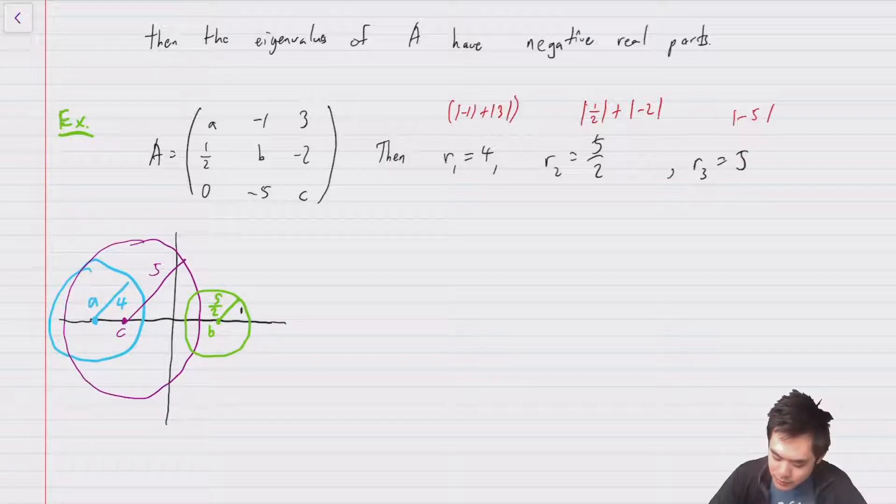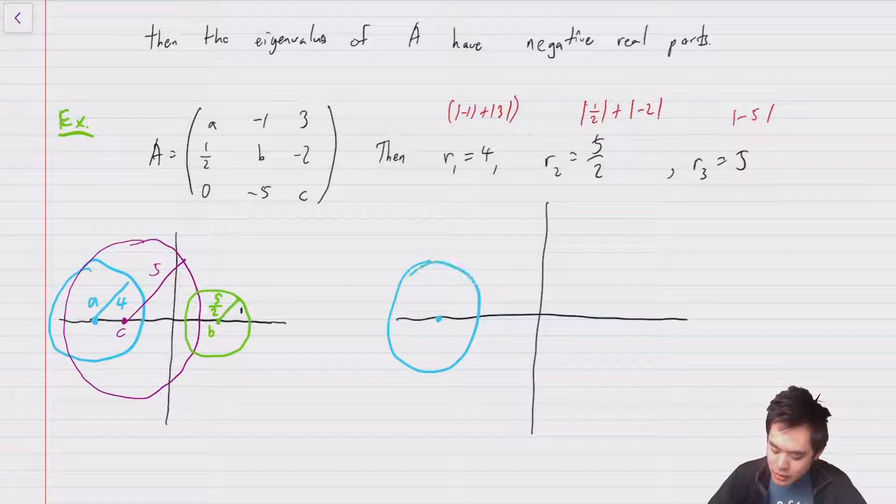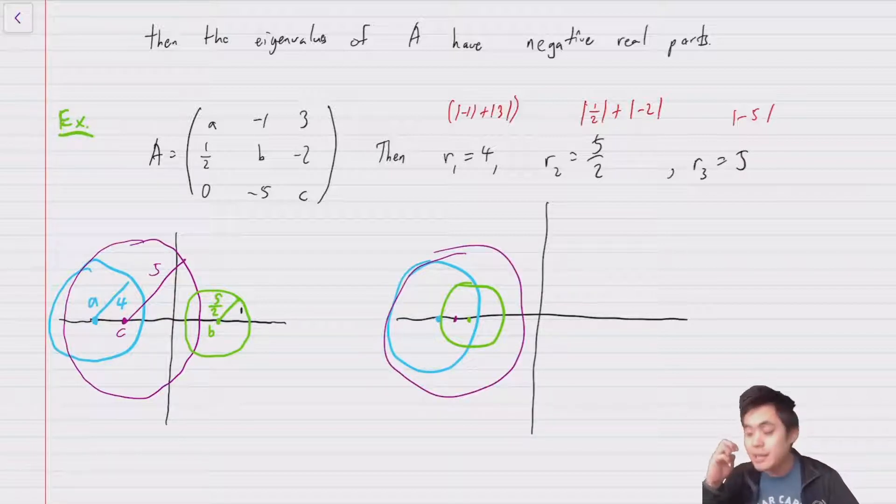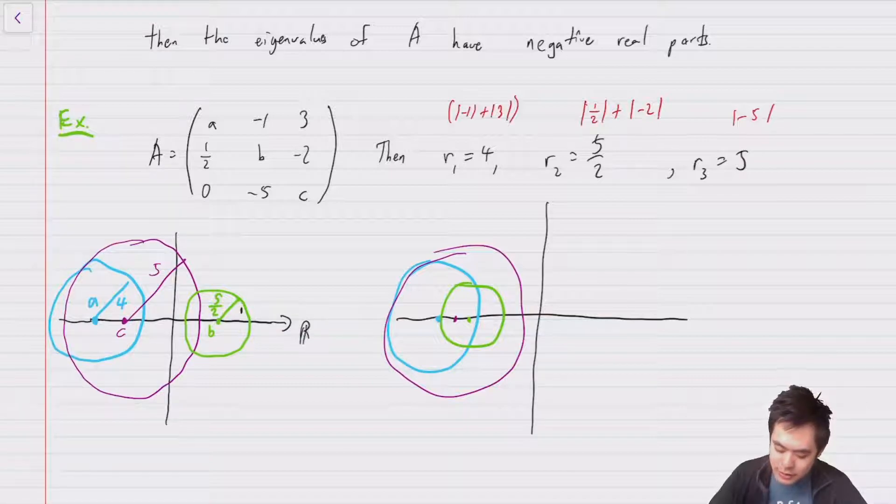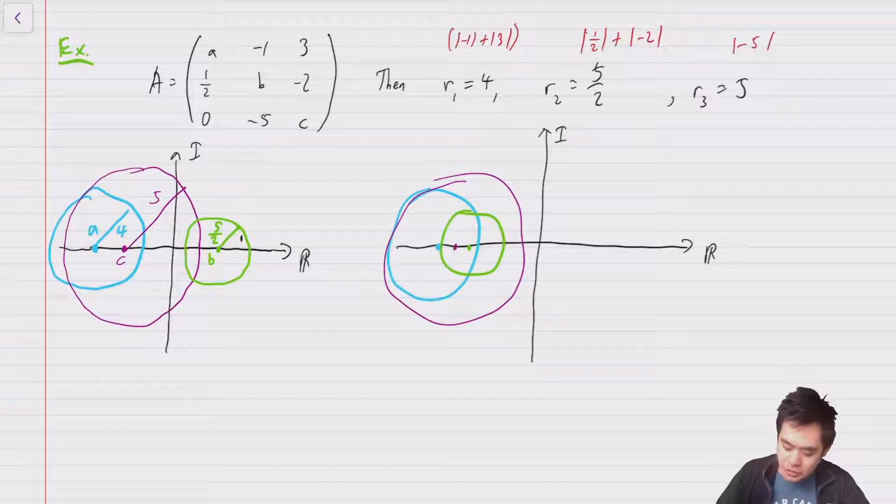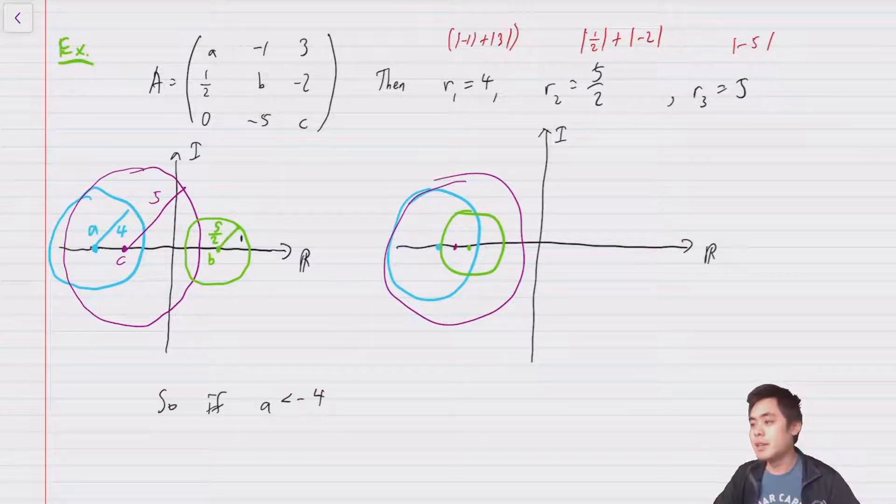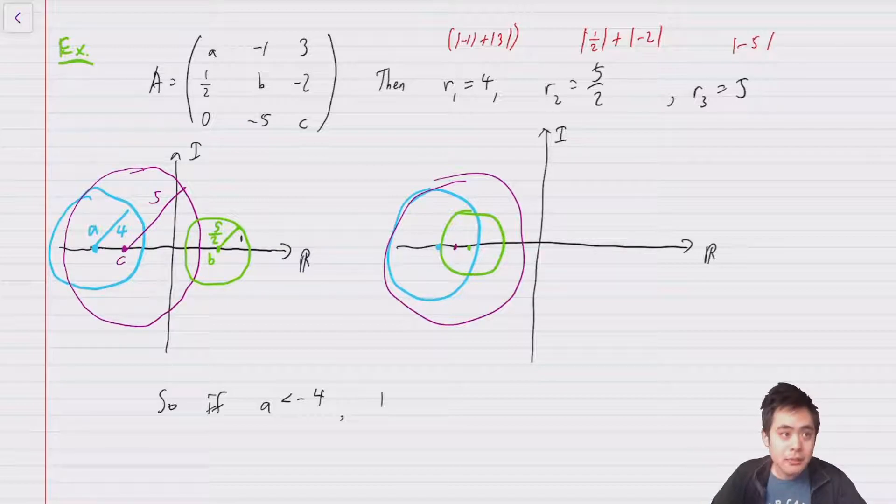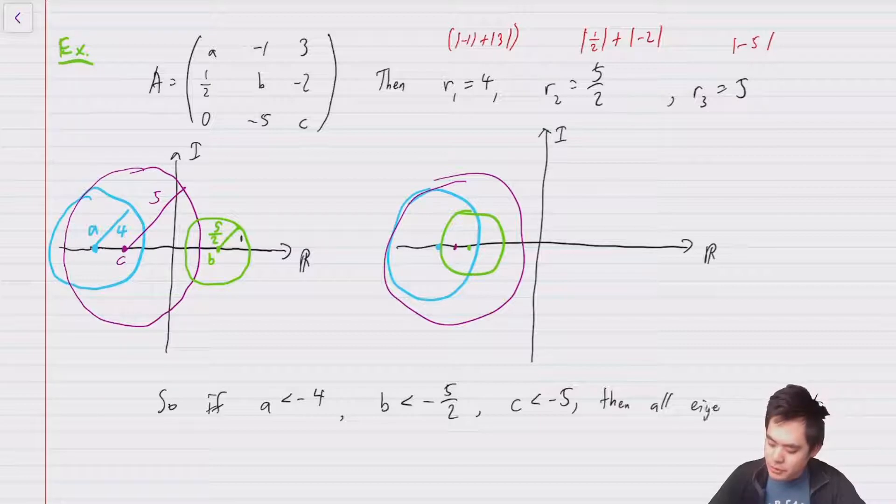You might have an eigenvalue there. On the other hand if you were to have the case where they were all negatives, so suppose your a was over here and you had your disk, your b is here you have your disk and let's say your c is also here and you have some disk. Well in that case you know that all the eigenvalues lie in those disks and therefore they all have negative real parts. Let's see this is the real axis and this is the imaginary axis. And so what the Gershgorin circle theorem says is that if a is less than -4, because it has to be less than -4 in order for the disk to not intersect with the positive half plane, and b is less than -5/2 and c is less than -5, then all eigenvalues have negative real parts.